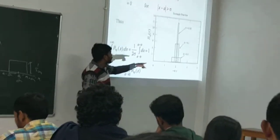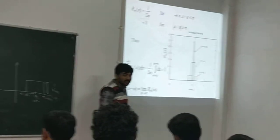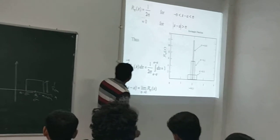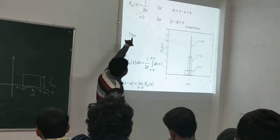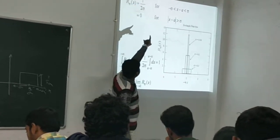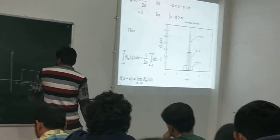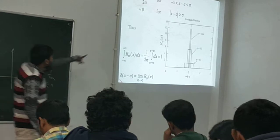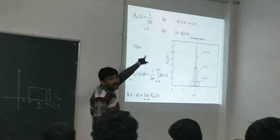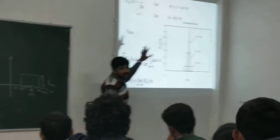At that point, the function will be called the delta function. As you see, here we find the formula: A sigma of X equals 1 over 2 sigma, for the interval where minus sigma is less than X minus A, which is less than sigma. And 0 for X where the modulus of X minus A is greater than sigma.